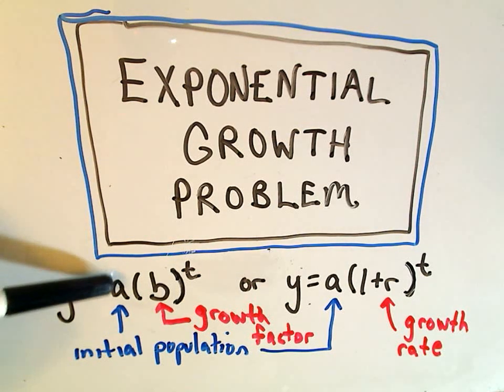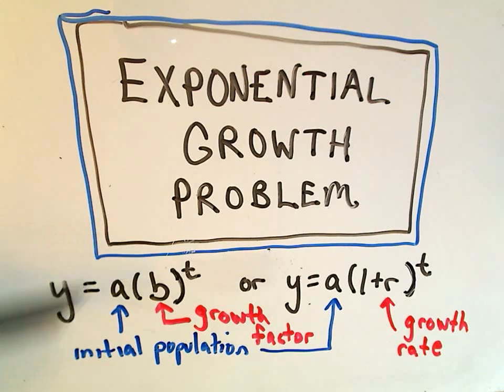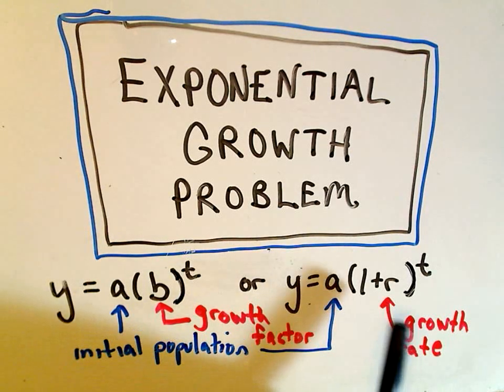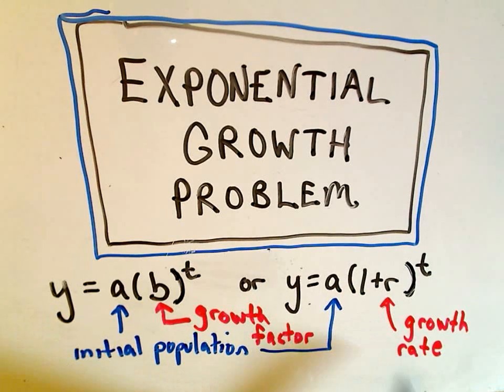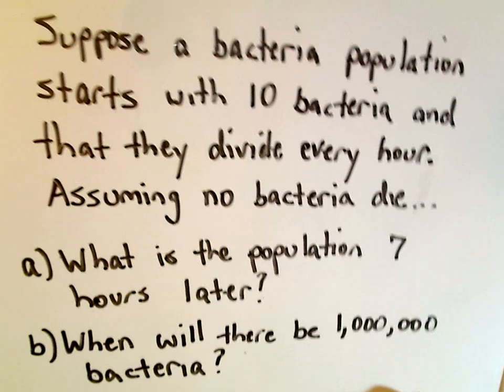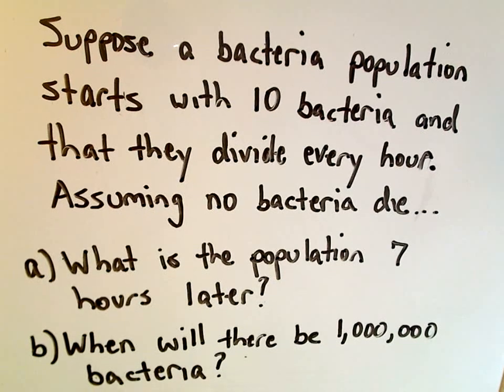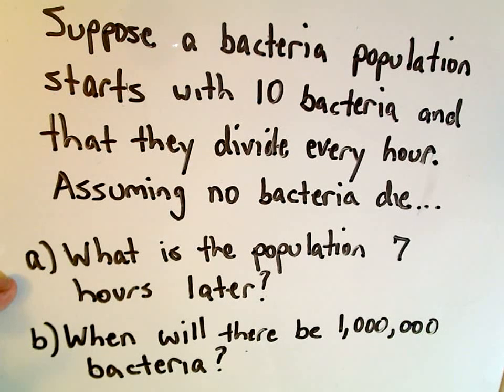Remember the value of a represents the initial population or the initial amount that you start with. We call the value b the growth factor. We can also write it instead of b inside the parentheses, we can write it as 1 plus r where r is the growth rate. Okay, so hopefully it's a little refresher. So in this problem it says we've got a bacteria population, we've got 10 bacteria and they divide every hour.